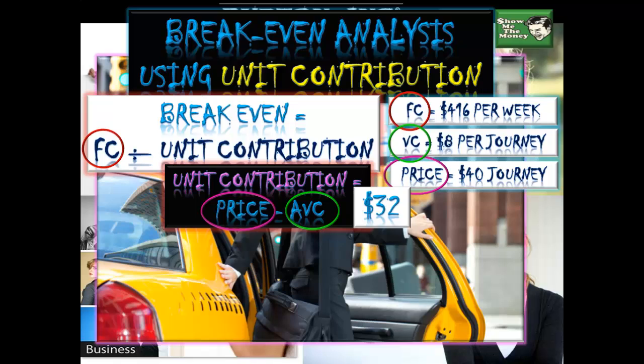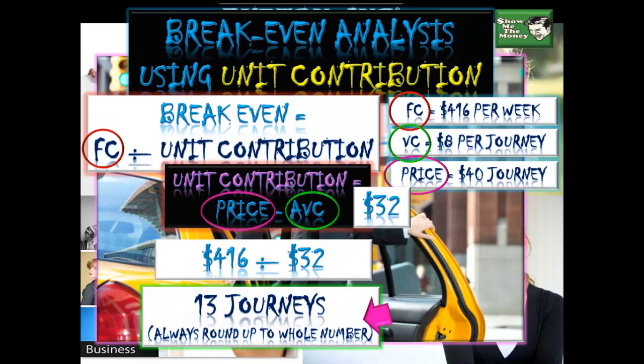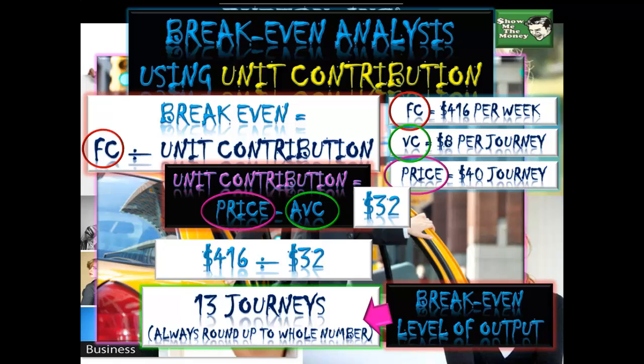We'll simply divide our fixed costs by that amount. $416 are our fixed costs, unit contribution $32, divide — 13 journeys. Always round up to the whole number, just like payback period. We don't talk about 0.8 or 0.7 of a good. We're looking at the nearest whole number — round it up.